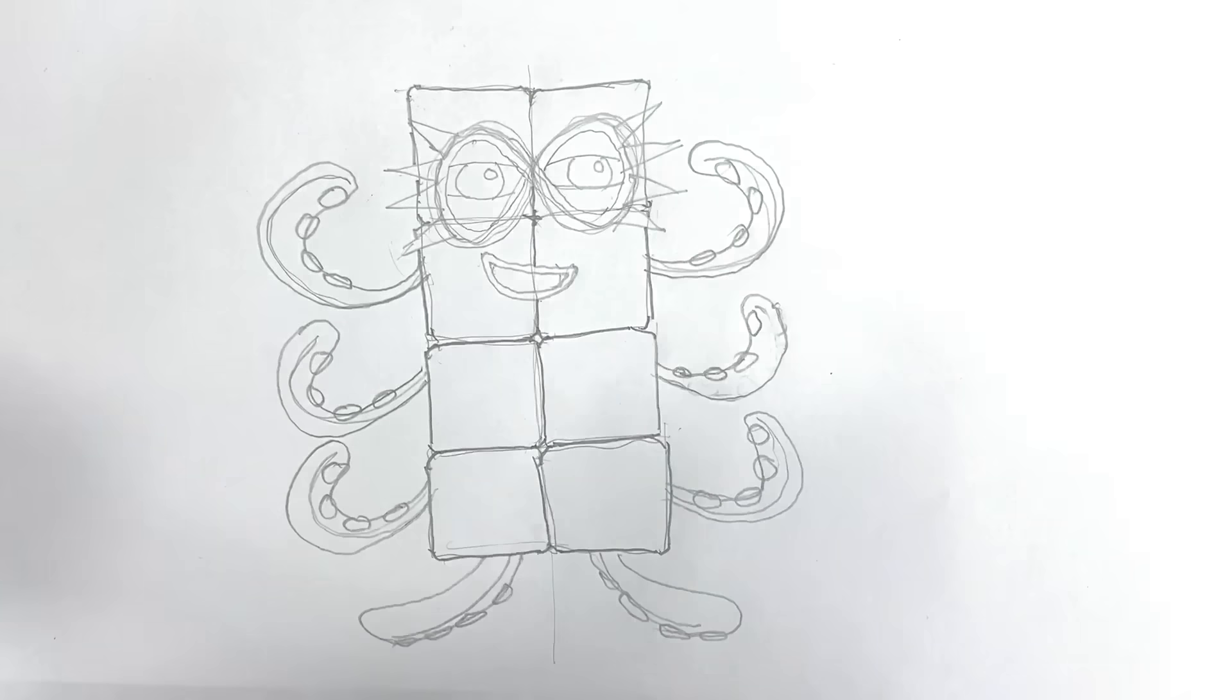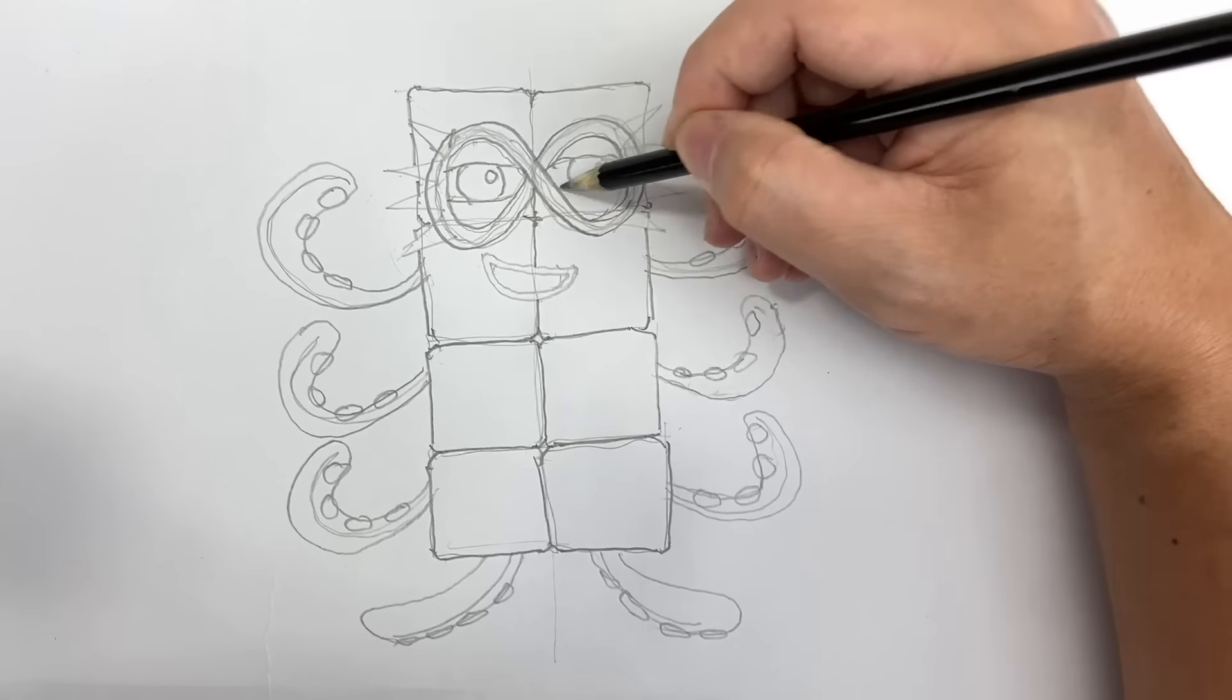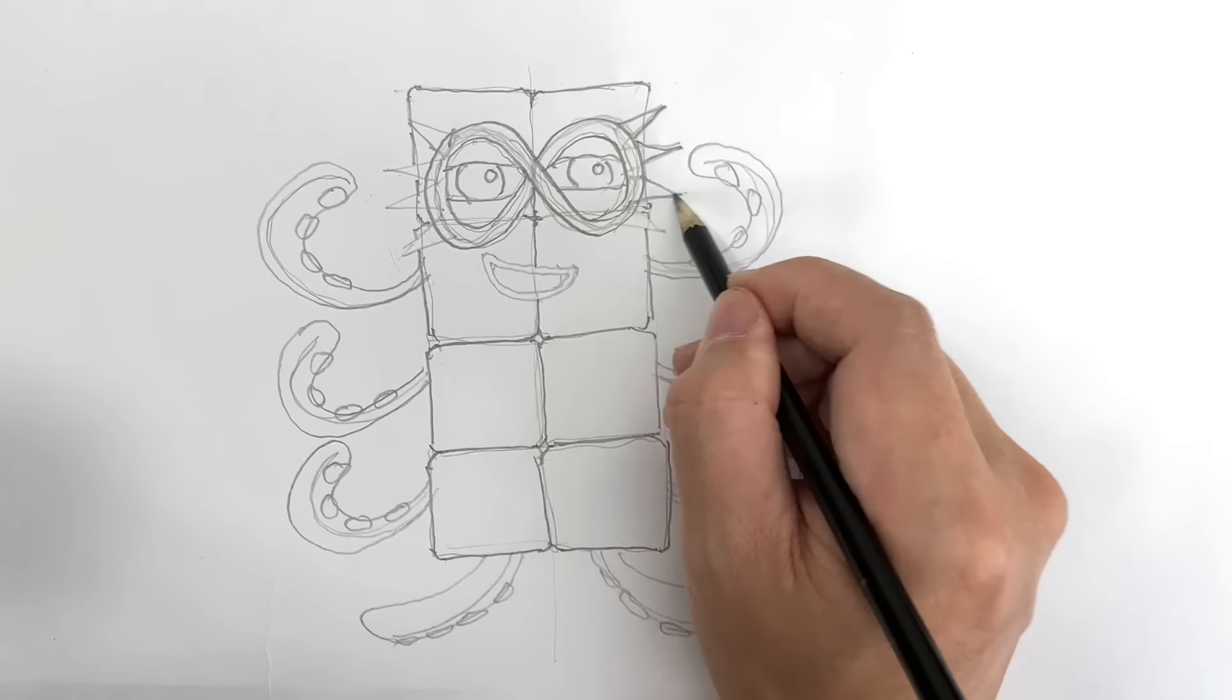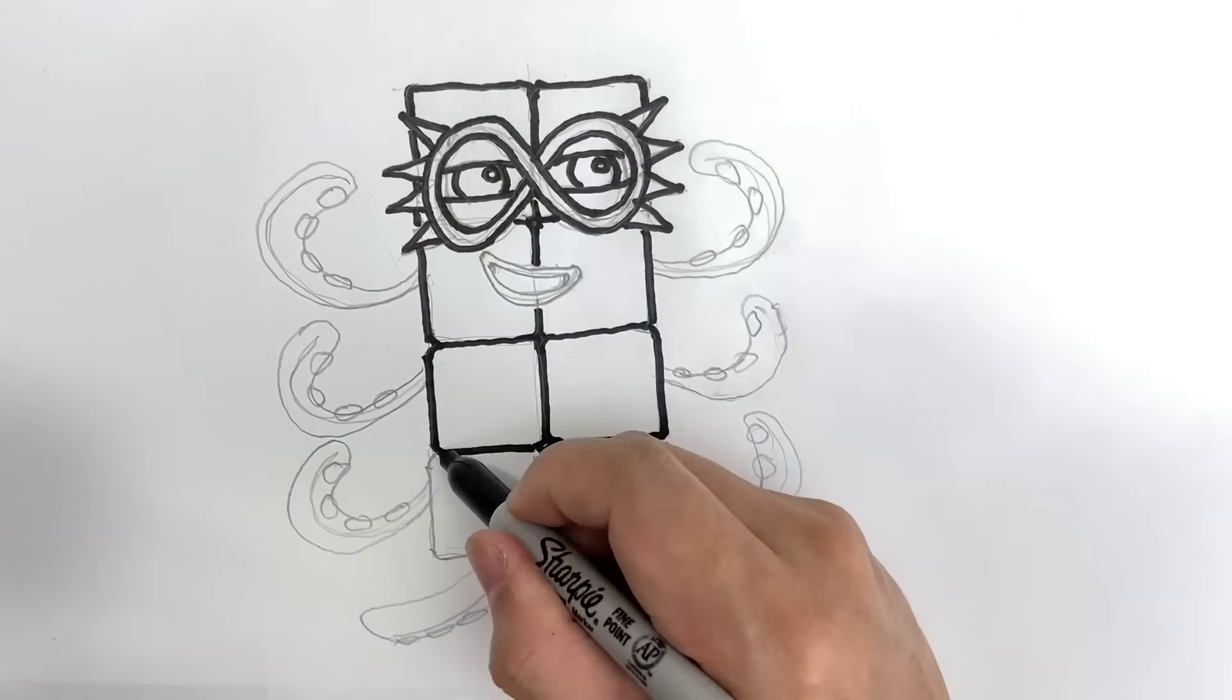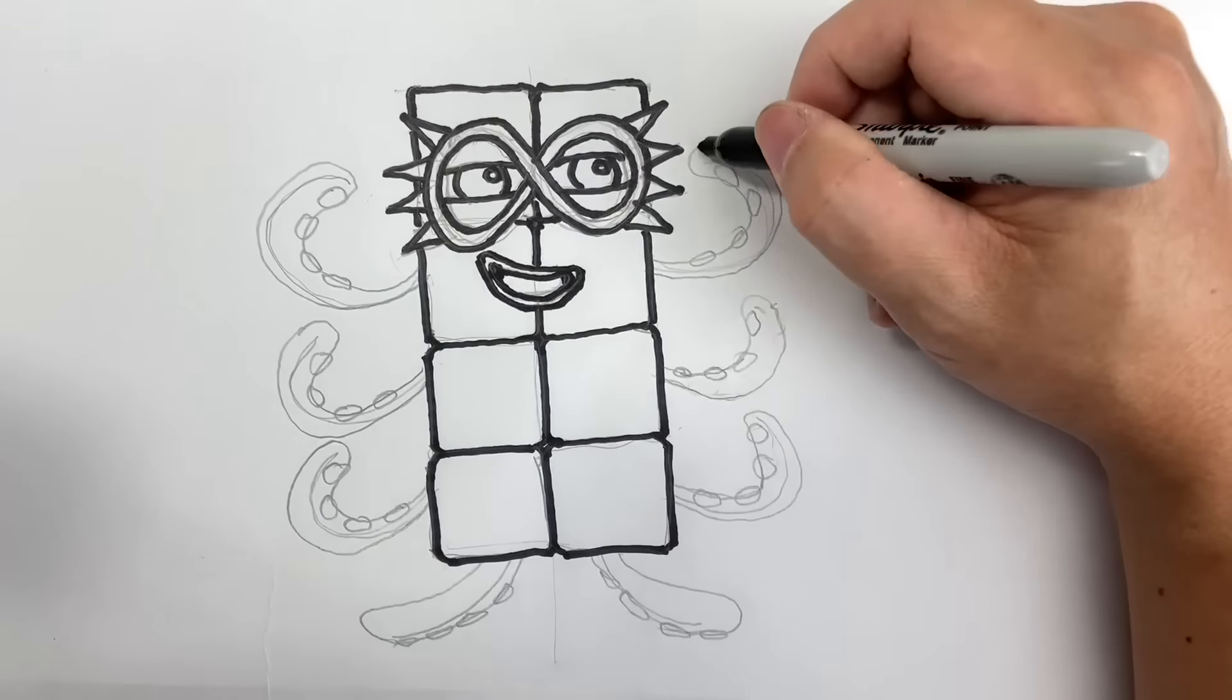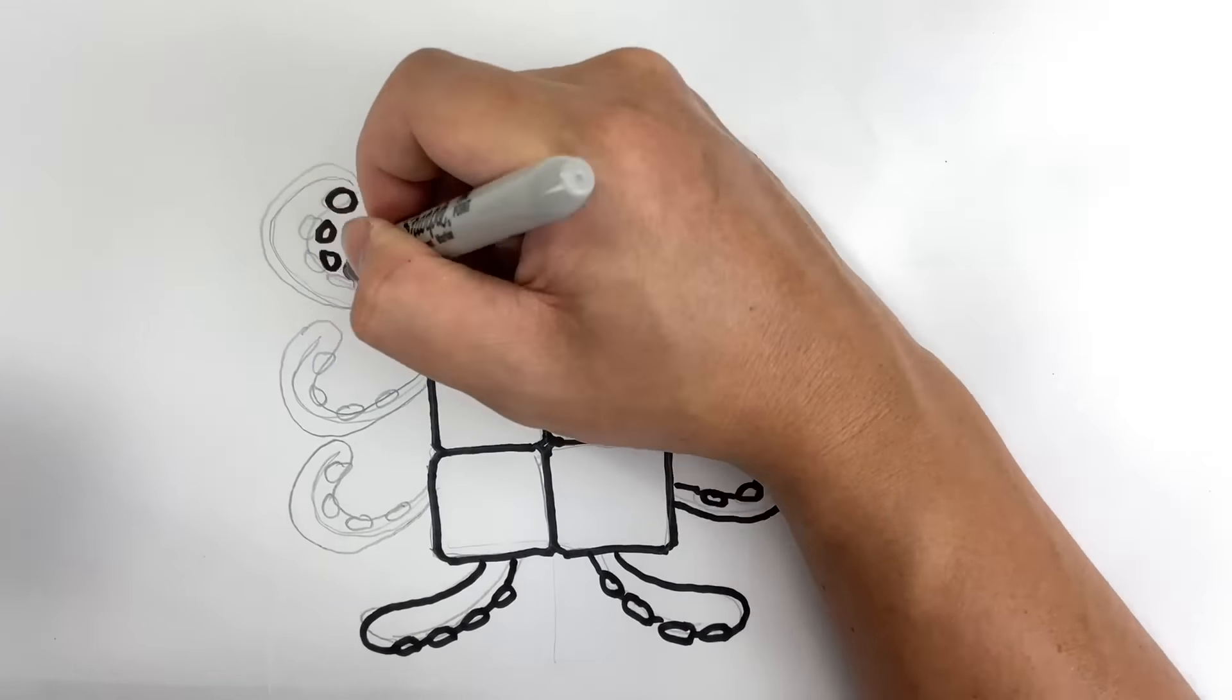Remember that Octoblock's mask has one strap that goes over and the other goes under. Finalize with a pencil and then with a marker. With a marker outline complete, you can erase the pencil lines. Now comes the fun part, coloring.